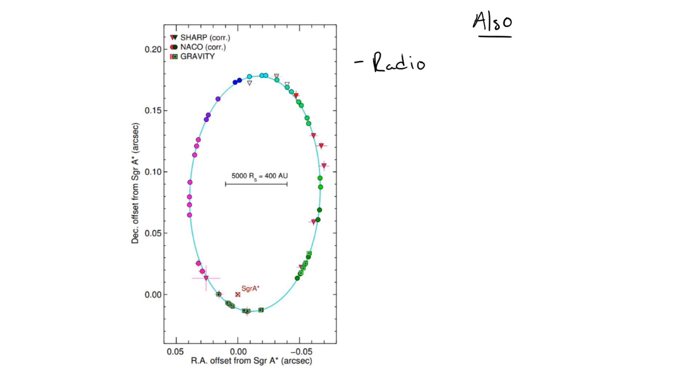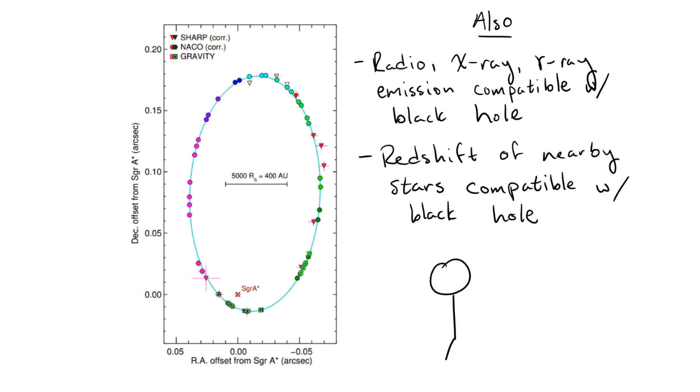This, along with various other measurements such as radio, x-ray, and gamma ray signatures, as well as red shifting of nearby stars as they approach the event horizon, all add up to conclusive evidence that the object at the center of the Milky Way is indeed a supermassive black hole.